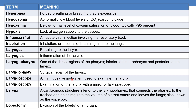Laryngoscope is a thin tube-like instrument used to examine the larynx. Laryngoscopy is the examination of the larynx with a mirror or laryngoscope. The next term is larynx — a cartilaginous structure inferior to the laryngopharynx that connects the pharynx to the trachea. It helps regulate the volume of air that enters and leaves the lungs and is also known as the voice box. Trachea is known as the windpipe.